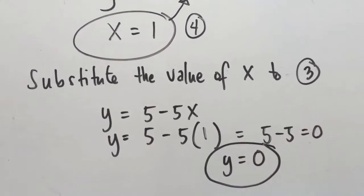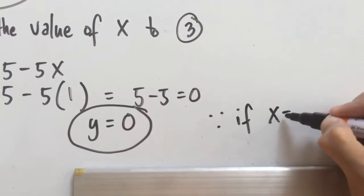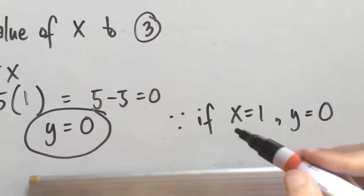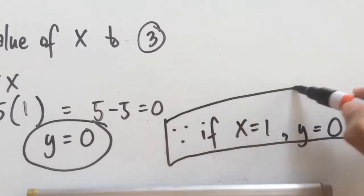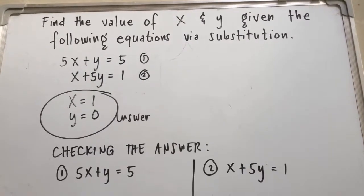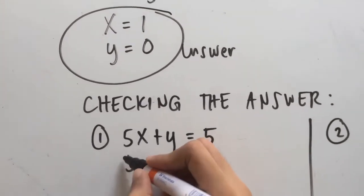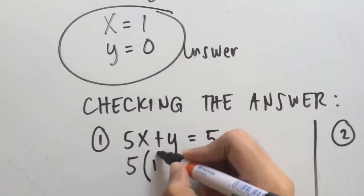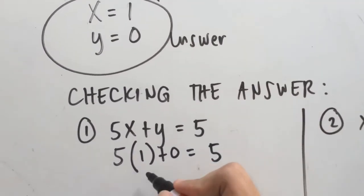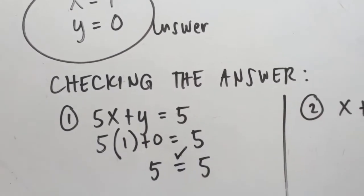Therefore, x is equal to 1 and y is equal to 0. To verify, we substitute these values into equation 1: 5x plus y equals 5 becomes 5 times 1 plus 0, which equals 5. That's 5 equals 5, so it's verified and correct.